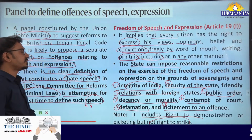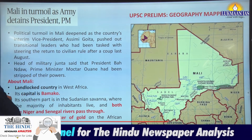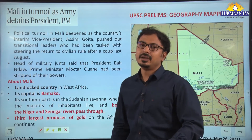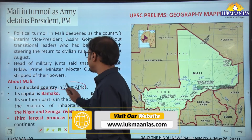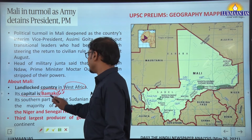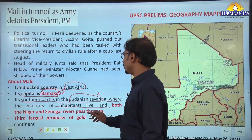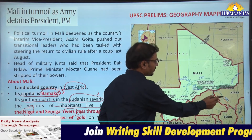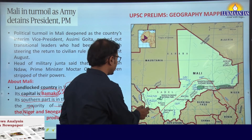In prelims, we can expect questions on this fundamental right. Next, 'Mali in Turmoil as Army Detains President and Prime Minister.' Last year there was a military coup, and now the elected president and prime minister have been arrested in Mali. Basic information: Mali is a landlocked country in western Africa; its capital is Bamako. Its southern part is southern Sudanian savannah where the majority of inhabitants live, and both the Niger and Senegal rivers pass through it.